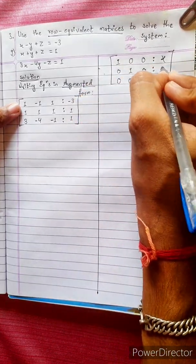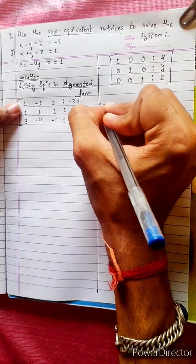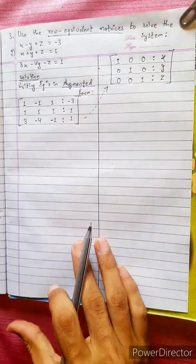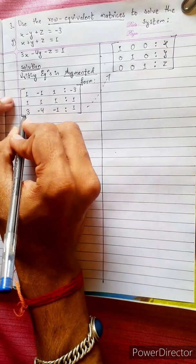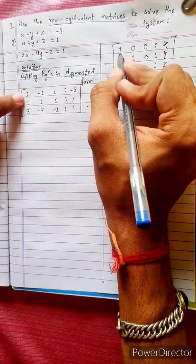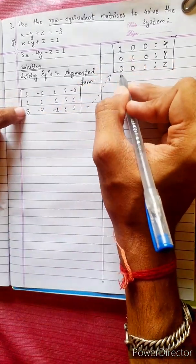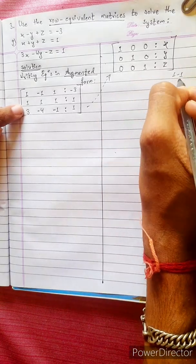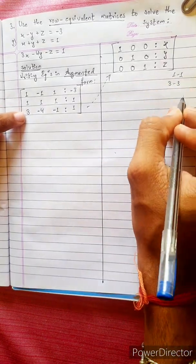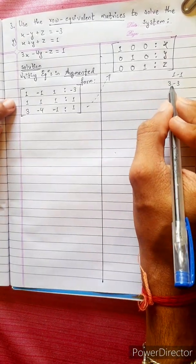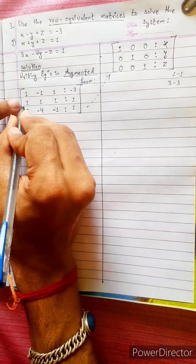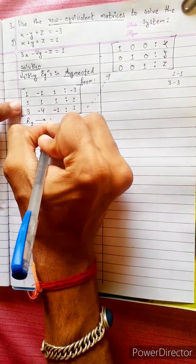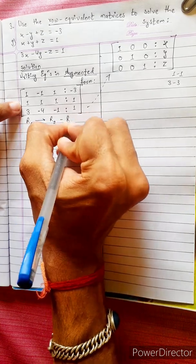Let's write the value of x, y, z. Let's write this formula. This is 1 and this is 1. 1 minus 3 is 0. 1 minus 1 is 0. 3 minus 3 is 0. Direct subtraction. All row line changes: R2 changes into R2 minus R1.